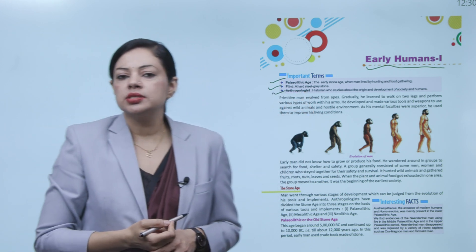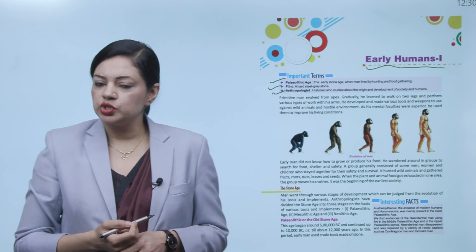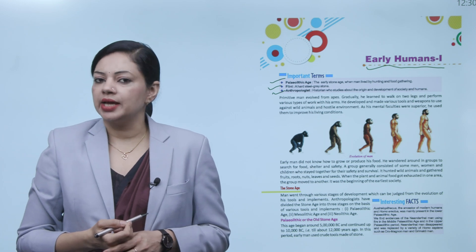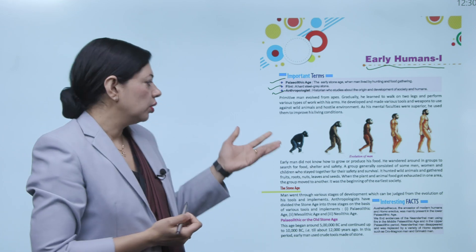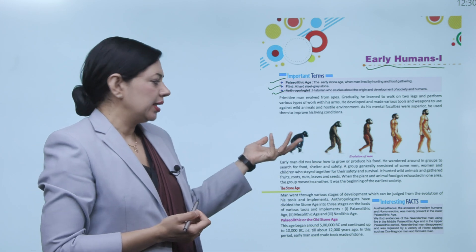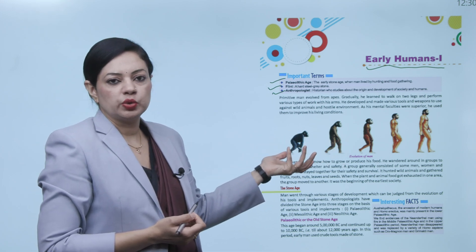Anthropologist: the historians who study the origin and development of society and humans. Now primitive man evolved from apes. Primitive man, the early man, evolved from ape-like creatures to human beings.